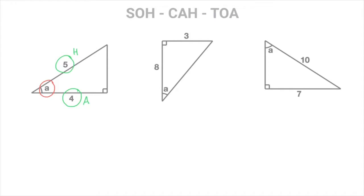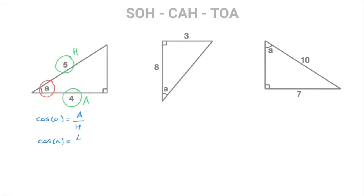Now that the information has been summarized, we look through the three words SOH, CAH, and TOA for the only one containing the letters A and H. It doesn't take us long to see that the only word containing both A and H is CAH. CAH tells us that the cosine of an angle is equal to its adjacent side length divided by the hypotenuse. Going back to our right-angled triangle, that allows us to write that cosine of angle A is equal to 4 over 5.